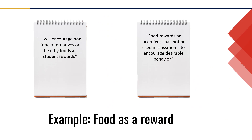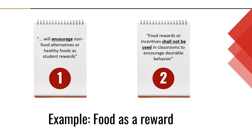Here are examples of language from two policies that relate to not using food as a reward. The first example states that the district will encourage non-food alternatives or healthy foods as student rewards — this statement would receive a rating of 1 because it is weakened by the word "encourage." The second example states that food rewards or incentives shall not be used in classrooms to encourage desirable behavior — this statement uses strong and forcible language, so it receives a rating of 2.